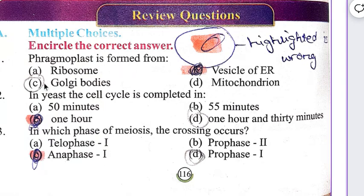Phragmoplast is formed from C, Golgi bodies. In yeast, the cell cycle is completed in D, 1 hour and 30 minutes.